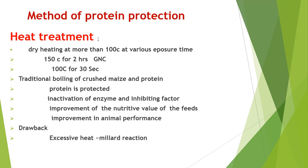Methods of Protein Protection — Heat Treatment: Dry heat at more than 100°C at various temperature-time combinations, such as 150°C for 2 hours or 100°C for 37 hours. Traditional boiling of crushed meal and protein. Protein is protected by inactivation of enzymes and inhibiting factors, leading to improvement of the nutritive value of feed and improvement in animal performance. Drawbacks include excessive heat and the Maillard reaction.